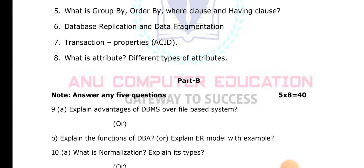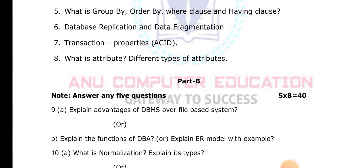What is First Normal Form (1NF)? In 1NF, every cell must contain only an atomic (single) value. If any cell contains more than one value, that must be removed to satisfy the first normal form.